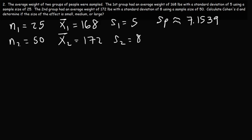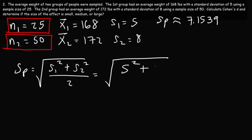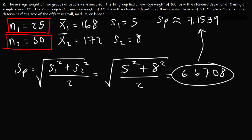We use the full formula here because the sample sizes of the two groups are significantly different — they're not the same. Notice what would happen if we tried the simpler formula: the square root of (S1 squared plus S2 squared) divided by 2. That gives the square root of (25 plus 64) divided by 2, which is the square root of 89/2, or 6.6708 — a different answer. Because the second group has a sample size of 50, it carries more weight, which is why the pooled standard deviation of 7.1539 is much closer to 8 than to 5.